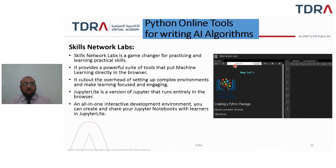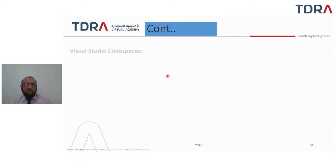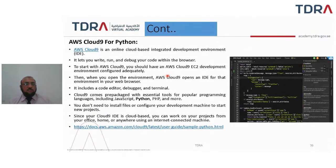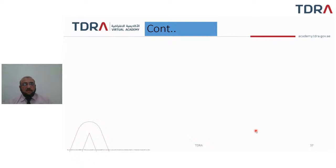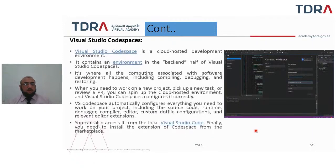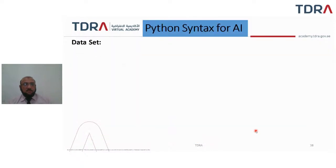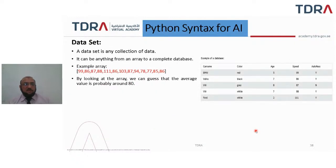For Python online tools — by using which we can write AI algorithms — there are Skills Network Labs, which we can use as an online platform for writing AI algorithms. Then we have AWS Cloud9 for Python, also an online platform. Then we have Visual Studio Code Spaces by Microsoft, which we can also use online for writing AI algorithms.